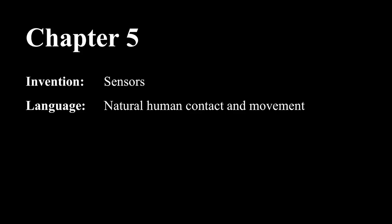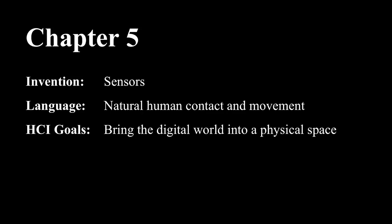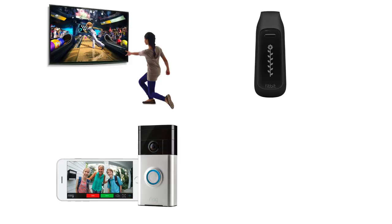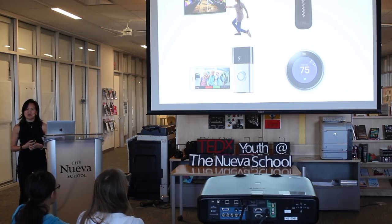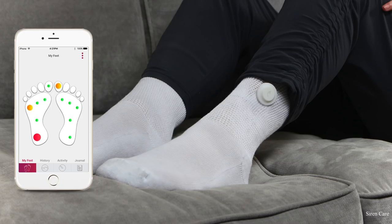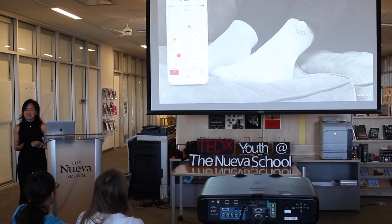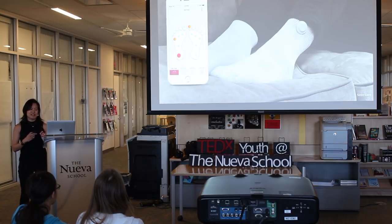Whereas in the first phase of computing we were bringing the physical world into a digital space, sensors now enable us to use natural movement to bring a digital world into a physical space. The Xbox Kinect made playing video games a physical endeavor. The Fitbit digitized our physical activity. Ring allows us to talk to visitors at our door even when we're not home. Nest made our thermostat smarter by adapting to our usage patterns. SirenCare has created smart socks that use temperature sensors to detect inflammation in real time for diabetics — conductive thread woven into the fabric detects where there's inflammation, and the information is uploaded to a smartphone app.